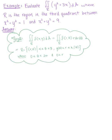Evaluate the double integral where R is the region in the third quadrant between a circle of radius 1 and a circle of radius 3.